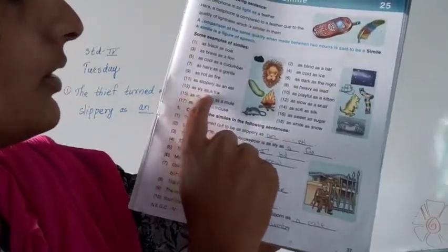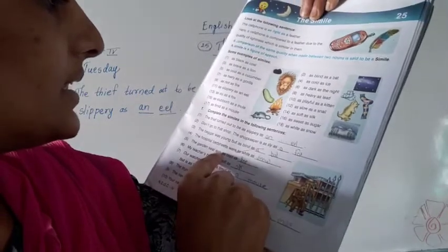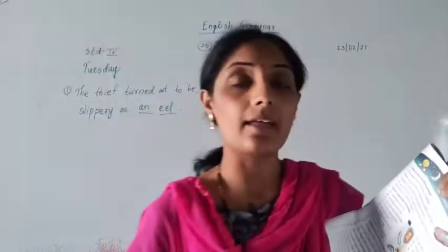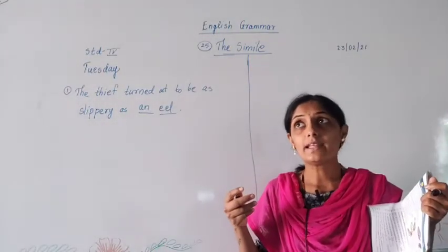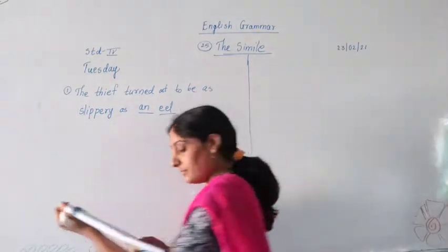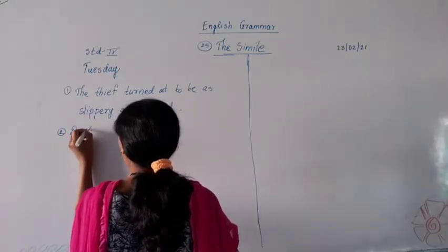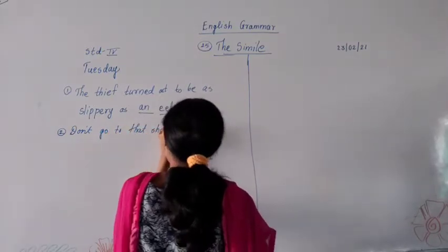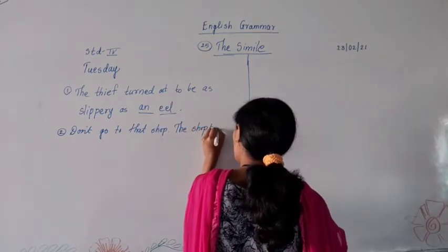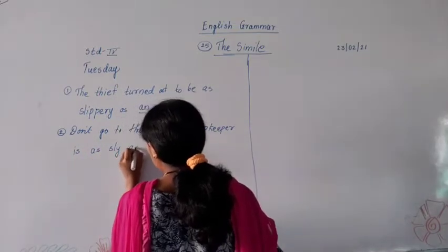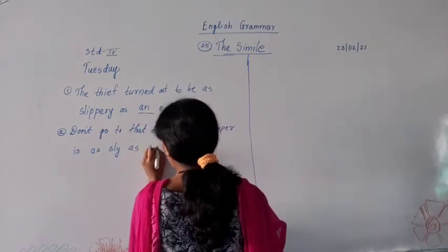Wait — it is not 'silly,' it is 'sly.' As sly as a fox. Don't go to that shop; the shopkeeper is as sly as a fox. Sly means cunning — that type of personality. So our second answer is: the shopkeeper is as sly as a fox.